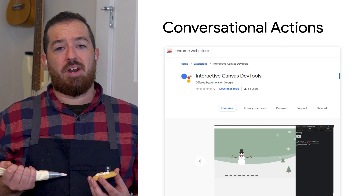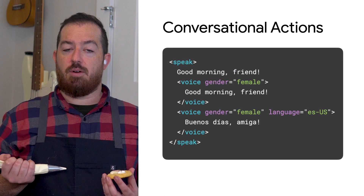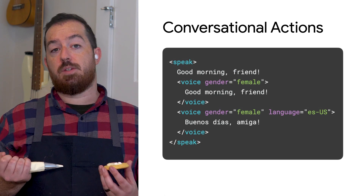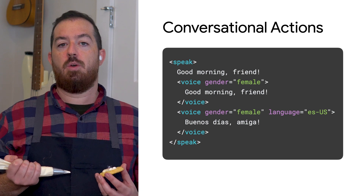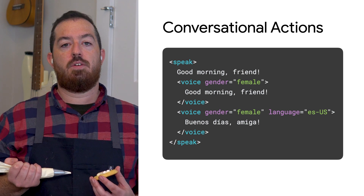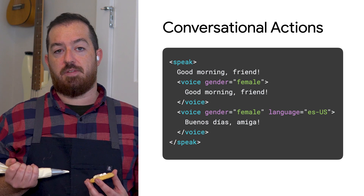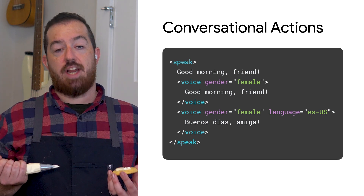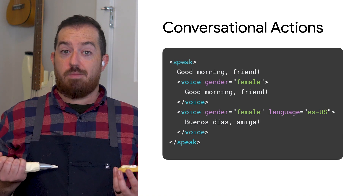In addition to some updates to the NLU that powers Assistant's voice recognition, we added support for several new SSML features within conversational actions. For example, you can now fine-tune the pronunciation of specific words within your actions, or change languages mid-sentence. It's pretty cool.